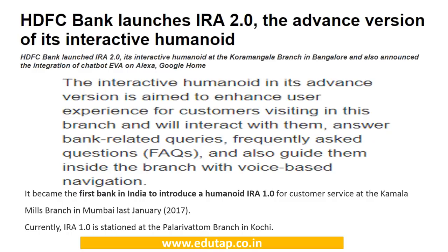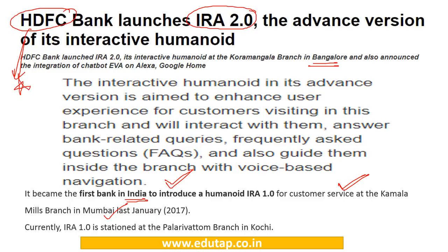HDFC Bank has launched IRA 2 — Intelligent Robotic Assistant, the second version. This news is important because HDFC Bank became the first bank in India to introduce a humanoid intelligent robotic assistant for customer services. The first was opened in Mumbai, and the advanced version has been stationed at one of its branches in Bangalore. It is used for customer support — guiding customers by answering questions and helping with voice-based navigation.